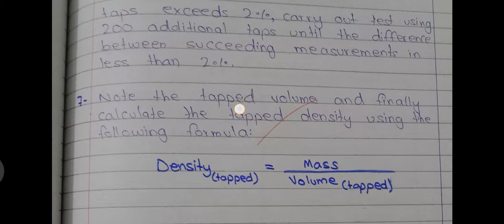Now the sample we're using is starch. The given mass of starch is 25 grams, and the volume you find of the starch in the graduated cylinder is 50 ml — that is the bulk volume. So bulk density equals mass over bulk volume: 25 over 50, giving 0.5 grams per milliliter.